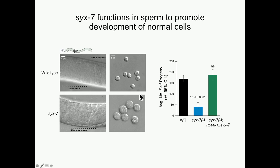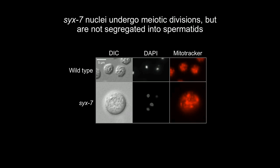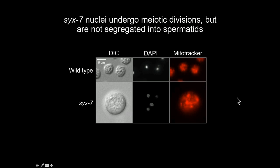The 6-7 mutants are producing large, abnormal-looking cells. To further characterize these defects, I used cellular markers including DAPI for DNA and MitoTracker for mitochondria. In wild-type spermatids, each cell has a single haploid nucleus and some mitochondria. In 6-7 mutant cells, there are no obvious mitochondrial defects revealed by MitoTracker; however, the cells contain multiple nuclei — most often four — within a common cytoplasm. Our conclusion is that 6-7 mutants appear to proceed through the nuclear divisions of meiosis II, but cytokinesis is either not happening or failing.